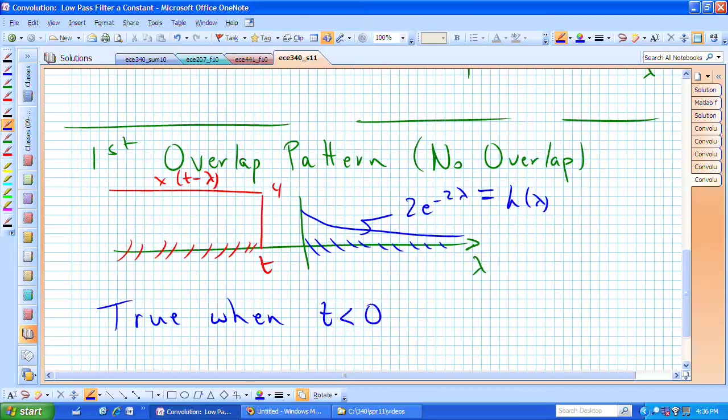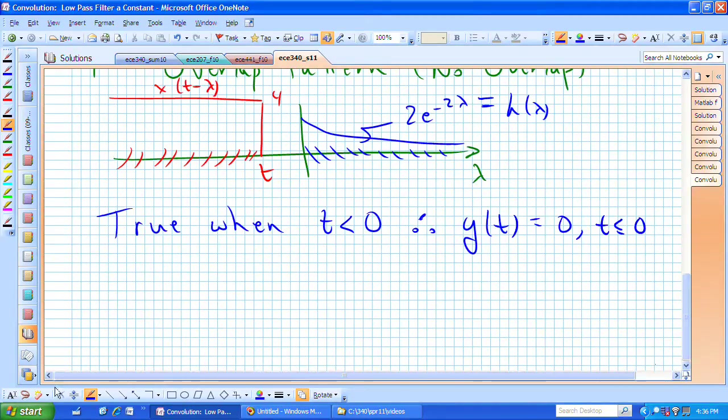When this rightmost edge of our input, which is labeled as t, as long as t remains to the left of lambda equals 0, we obtain an output equal to 0 for t less than 0.